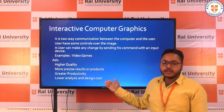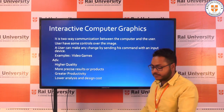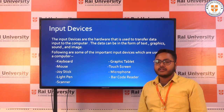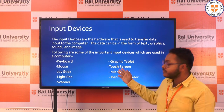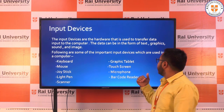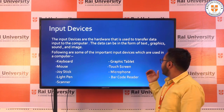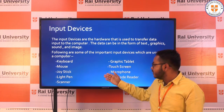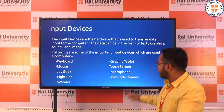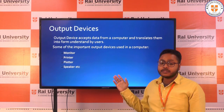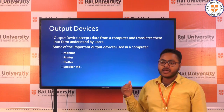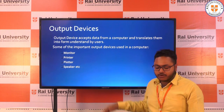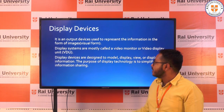The advantages of interactive computer graphics are high quality, more precise results, greater productivity, and lower analysis and design cost. We use computer graphics using input and output devices. Input devices are hardware used to transfer data to the computer. The data can be in the form of text, graphics, sound, and images. Some important input devices are keyboard, mouse, joystick, light pen, scanner, and many more. Output devices accept data from a computer and translate them into human-readable form. Important output devices include monitor, printer, plotter, and speaker.